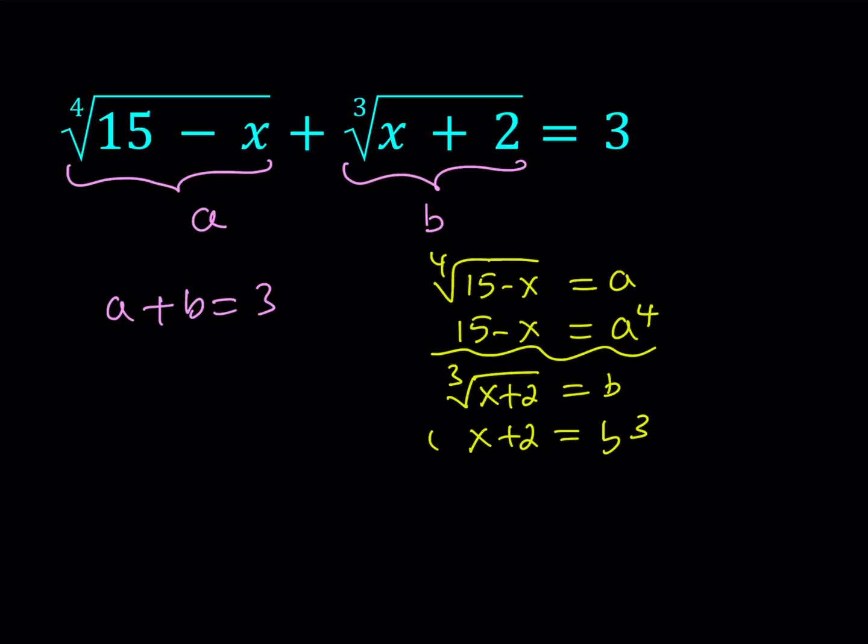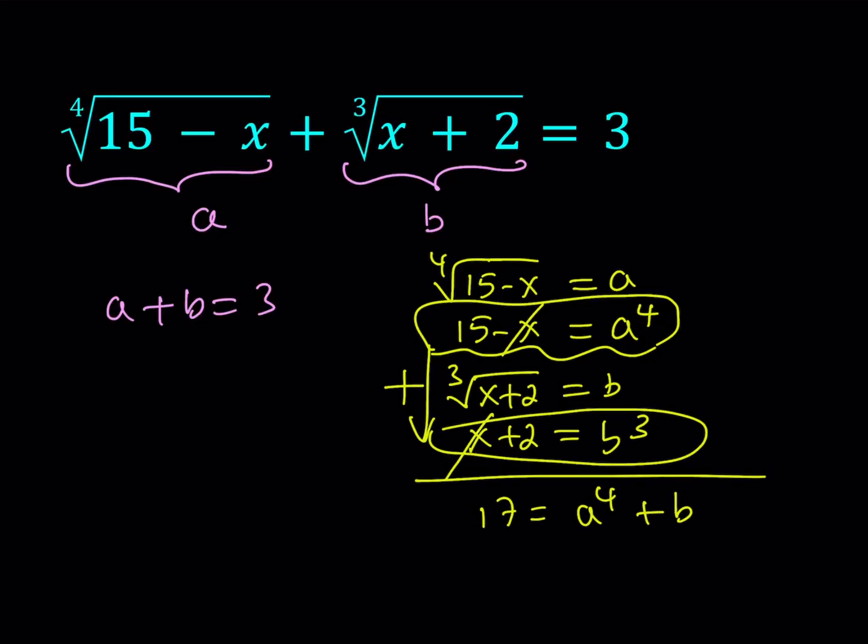Now I would like to use this one and this one together. And what I can do is I can actually add those two equations. If we add them we get the following. The x cancels out. We get 17 equals a to the 4th power plus b to the 3rd power. So a to the 4th plus b to the 3rd equals 17. Now this gives us a nice system of equations in two variables. And we should be able to solve it.